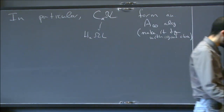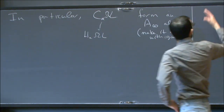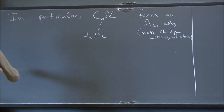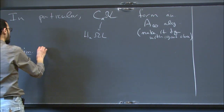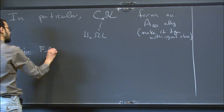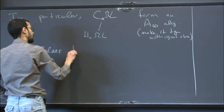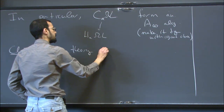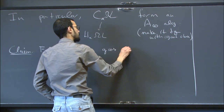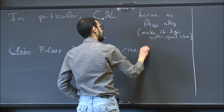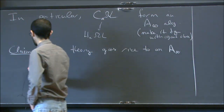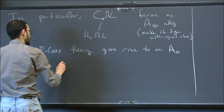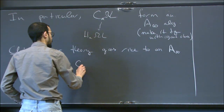Almost every time I write homology and make a statement about it being an algebra, I mean you should look at the chain level, or use the notion of transfer which transfers structure from chains to homology. The claim is: Floer theory gives rise to an A-infinity deformation of chains on the based loop space.